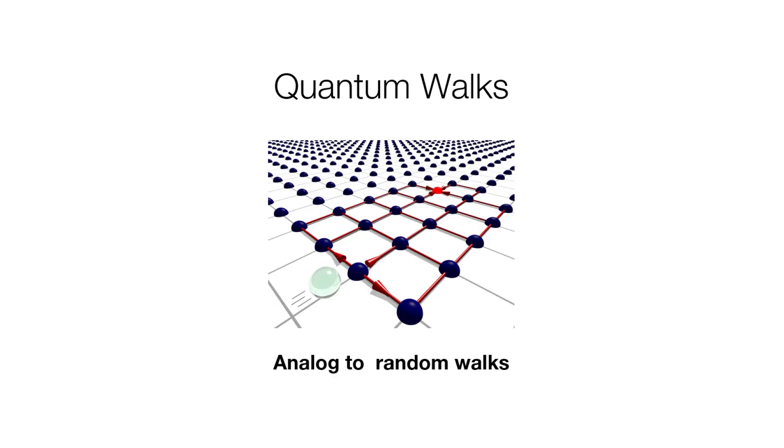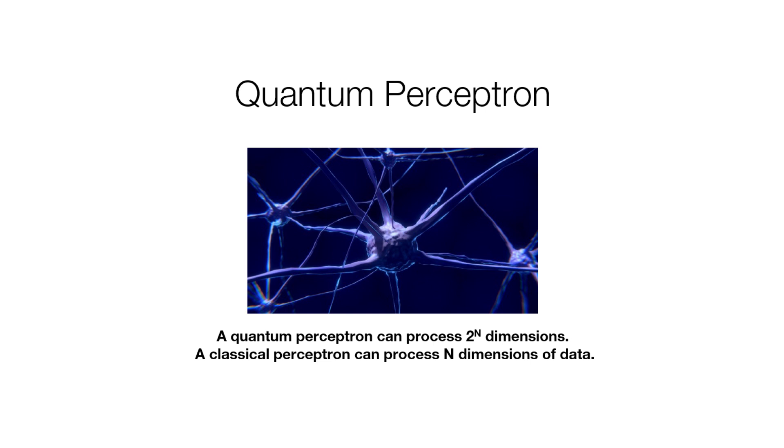Moving on to quantum walks — everybody is familiar with classical random walks. You have a particle which can move left or right with a probability of 0.5, similar to a coin flip. The quantum walk is a quantum analog to a random walk; it can substantially reduce time consumption. You can simulate using Monte Carlo methods and Markov chains, and apply quantum algorithms to wealth management and data trading. The quantum perceptron can process two to the power of n dimensions, whereas a classical perceptron can process only n dimensions. The perceptron connects to various neurons, creating a sub-neural network.